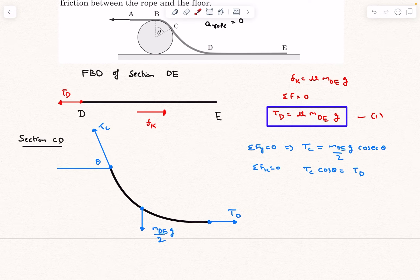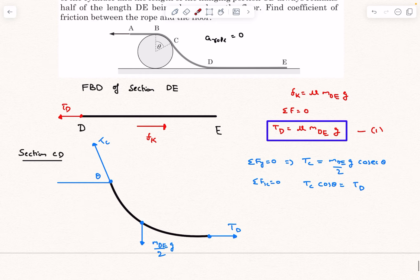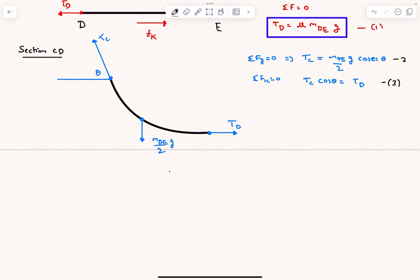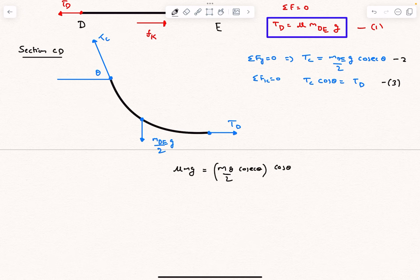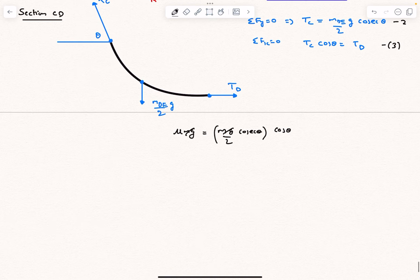Now writing the force balance equations we get these two expressions T_C and T_D. So essentially what we need is the value of T_C. So we can get rid of T_D. T_D, which is μ MG, equals T_C cos theta, and T_C itself is MG by 2 cosec theta. This whole thing multiplied by cos theta. So as you can see, MG gets cancelled out and μ becomes equal to cos theta divided by 2. This is the answer to the problem.